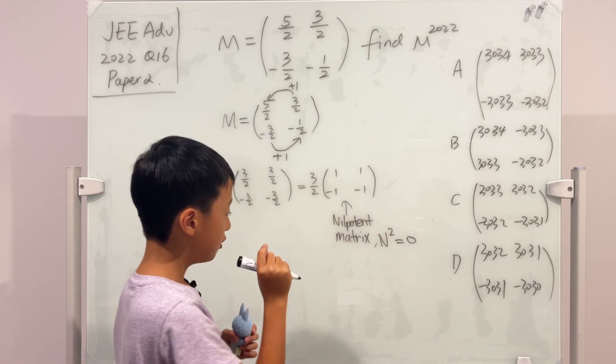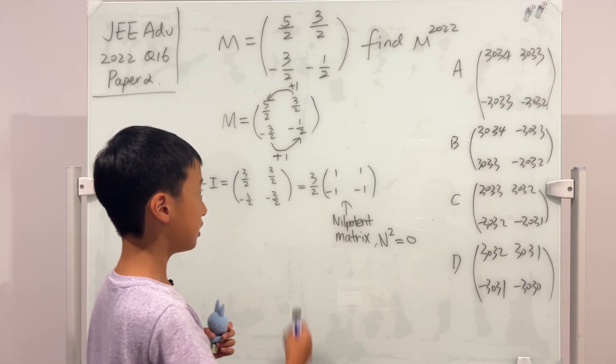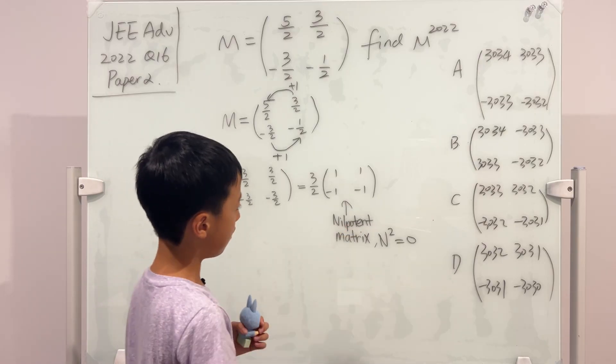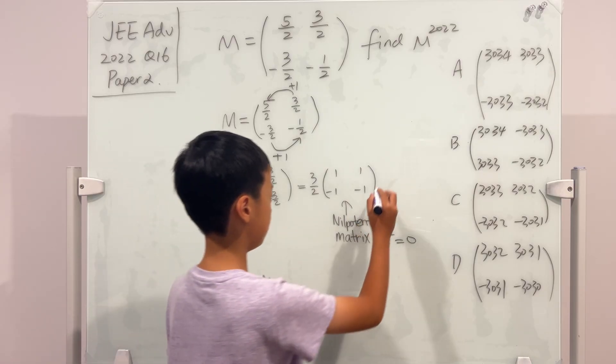Nilpotent matrix. That being said, we know that N cubed can be 0, N to the power 4 can be 0, let alone N to the power 2022 can be 0. And if you want to, you can change this into 3 over 2N, but I'm just going to do it for you guys.